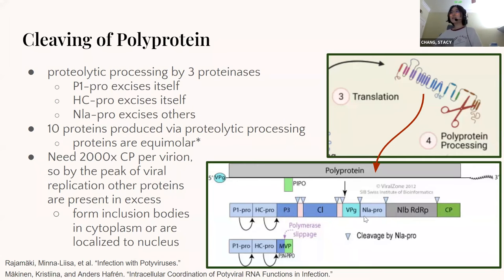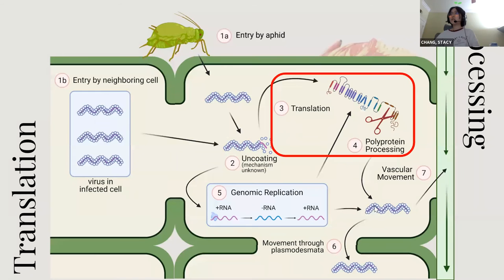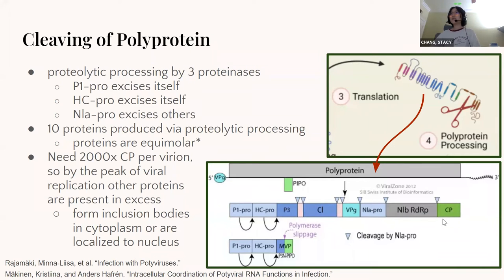When the polyprotein is cleaved, the proteases do their work and produce 10 proteins, which are mostly equimolar, except for the early proteins and PIPO. That's actually a problem for this virus, because the RNA needs 2,000 coat proteins to envelop it. So in order to create 2,000 coat proteins, it also has to create 2,000 of all these other proteins. By the peak of replication, there's a huge surplus of these other proteins, and this is what forms the inclusion bodies we can see through the microscope.